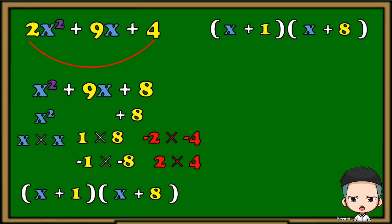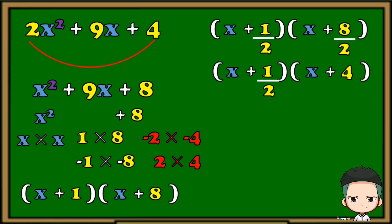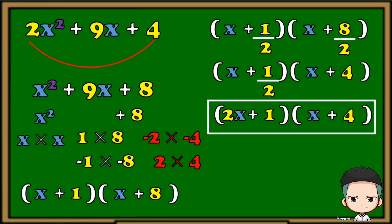Now we need to bring back the numerical coefficient 2 that we removed earlier. We're going to put it as a denominator of the factors 1 and 8. Next, let's simplify these fractions: 1 half is still 1 half, and 8 over 2 is equal to 4. Next, we just have to remove the denominator by putting it as a numerical coefficient. The factored form of 2x squared plus 9x plus 4 is the quantity of 2x plus 1 multiplied to the quantity of x plus 4.